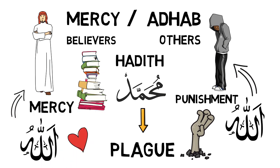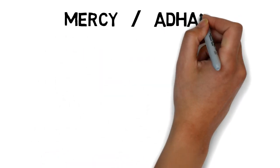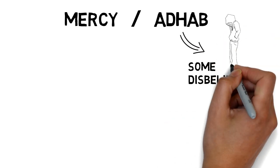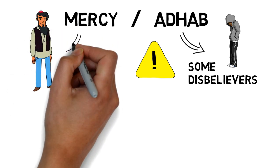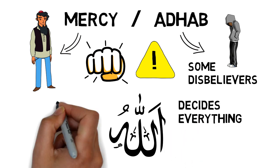So this is our theological understanding of plagues. It is an adhaab - notice, by the way, he did not say an adhaab on all kuffar. He did not say this, our Prophet. He said it is an adhaab on whomever Allah wants it to be, and it is a rahma for the believers.